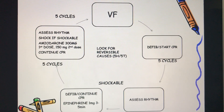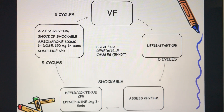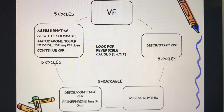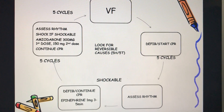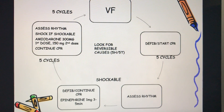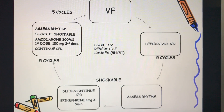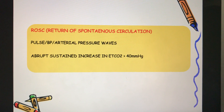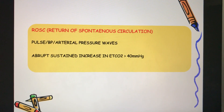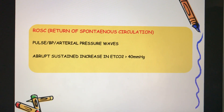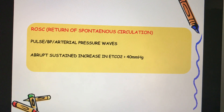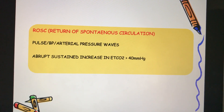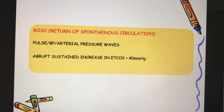If it is a shockable rhythm, defibrillate again, continue CPR, and give epinephrine 1 mg every 3 to 5 minutes. After two more minutes of CPR, reassess the rhythm. If still shockable, shock the patient and consider amiodarone or magnesium. Continue this cycle until return of spontaneous circulation (ROSC), which is defined by presence of pulse, blood pressure, arterial pressure waves on an art line, or an abrupt sustained increase in ETCO2 above 40 mmHg.